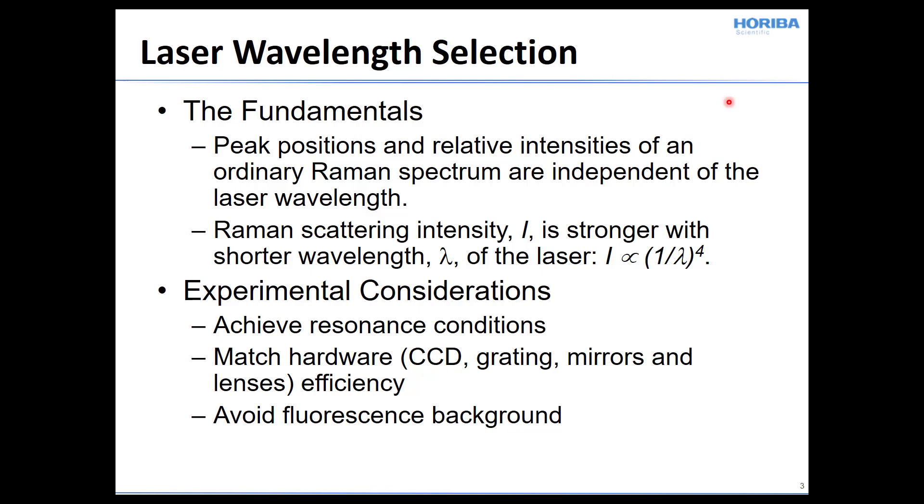In consideration of laser wavelength selection, let's start with the fundamentals. First is that the peak positions and relative intensities of an ordinary or normal Raman spectrum are independent of the laser wavelength. So whether you're using 532 nanometer excitation or 632.8 or 785 or 405 nanometers, the Raman spectrum that you generate should be the same as long as you're not in resonance, that is to say that there's no transition from the ground to the excited electronic state when using this laser excitation.